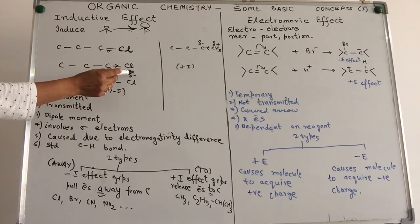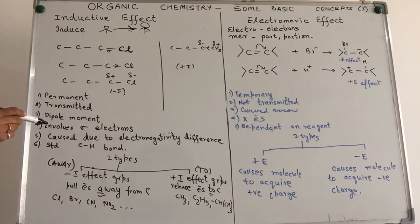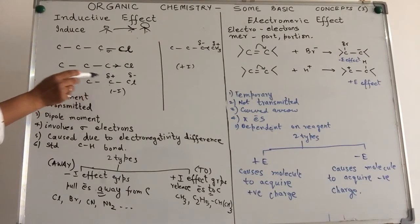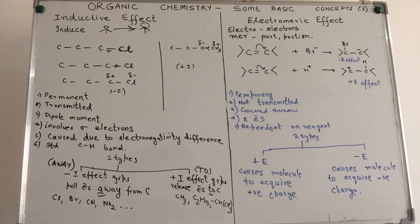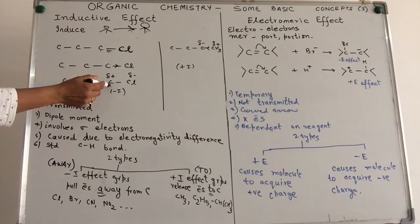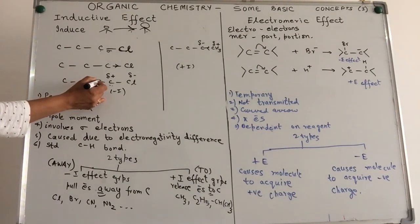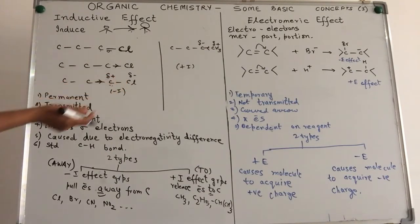With the result, chlorine will acquire a slight negative charge whereas the carbon to which it is attached, from which it is pulling away the electron pair, acquires a slight positive charge. Now this carbon, because it has got a positive charge, it wants electron pair to satisfy itself. So it pulls the electron cloud from the next carbon atom, because it knows it can't have its way with chlorine.